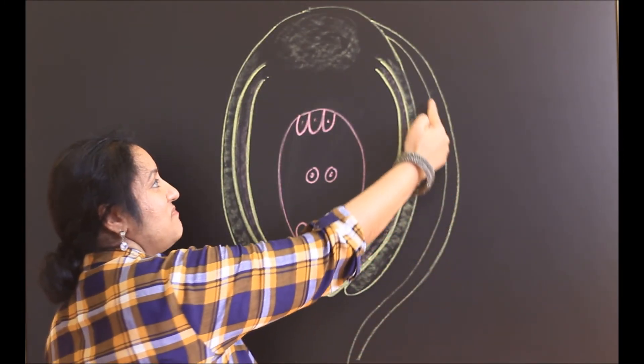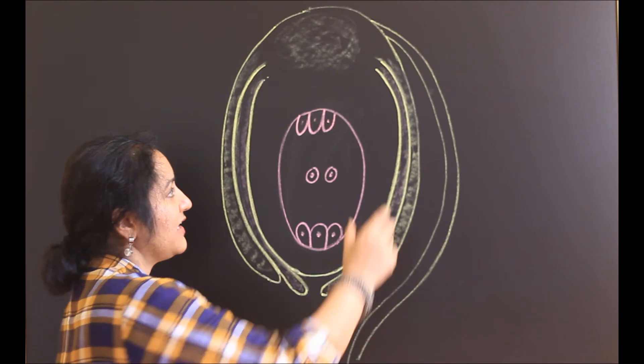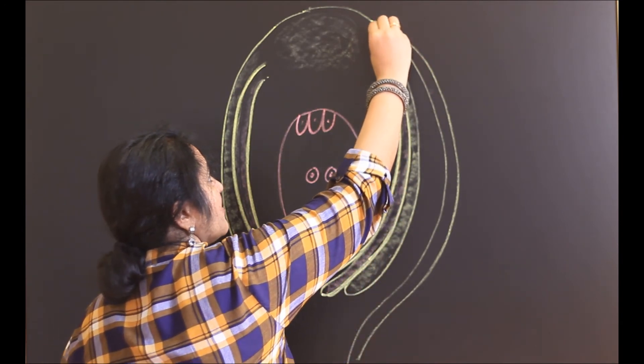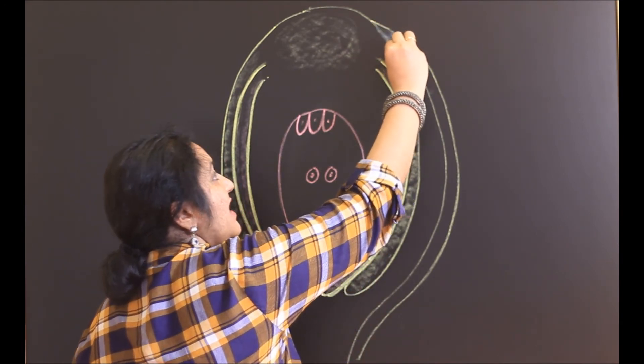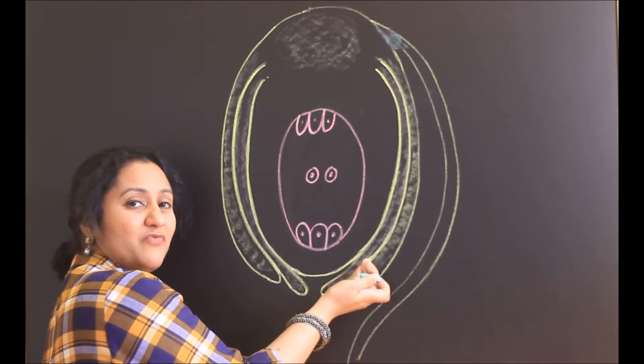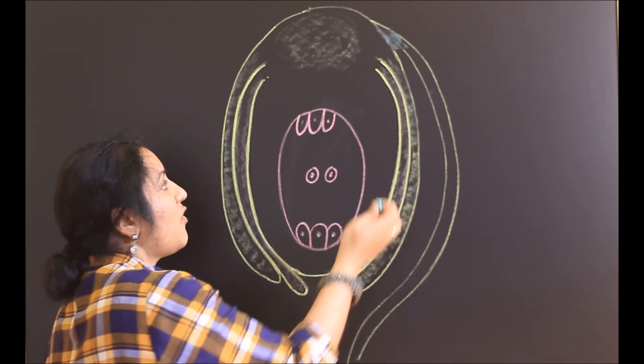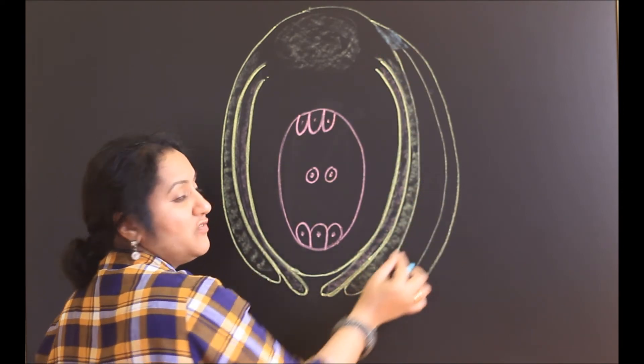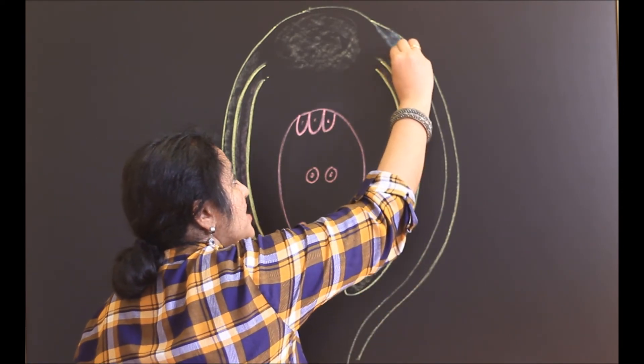This is the funicle. It meets the nucellus at this point and it forms a ridge and that ridge is called as the raphe. Let us shade even that because in an anatropous ovule, the funicle is very closely attached to the wall of the ovule. So we don't have to leave this space.